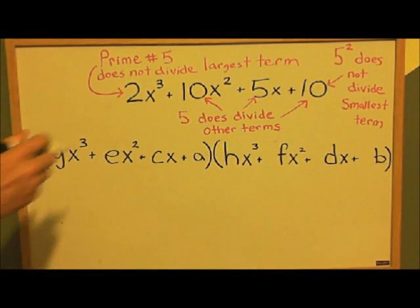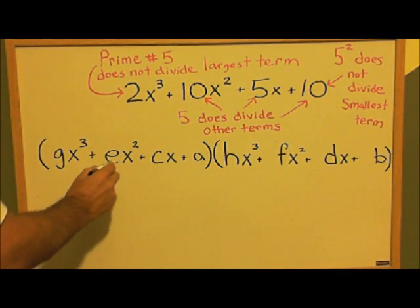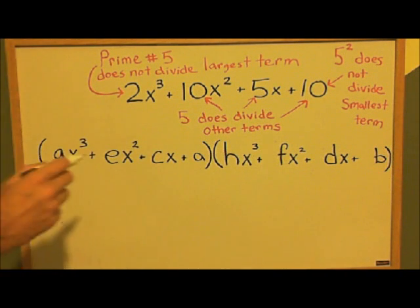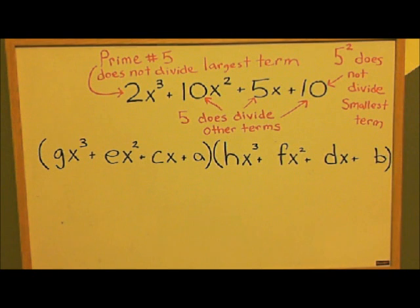So we want to try to factor this into two polynomials of order x squared or smaller, but it turns out in the proof we're going to need this x to the third term as well, so we'll put that there.